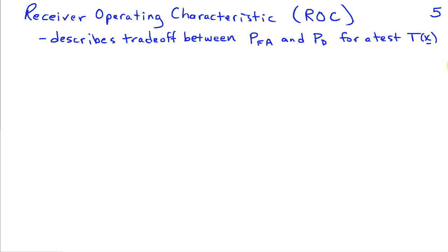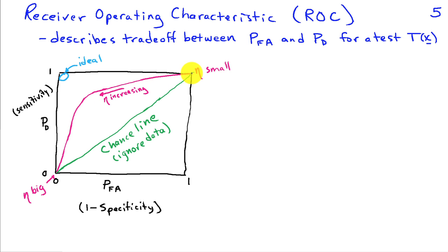The ROC is typically displayed as a graph with the probability of false alarm on the horizontal axis (ranging from 0 to 1) and the probability of detection on the vertical axis (also 0 to 1). In medical terms, the horizontal axis is one minus specificity, and the vertical axis is sensitivity. If the threshold is very small (minus infinity), we always decide H1, giving perfect detection (PD = 1) but also PFA = 1. Conversely, as the threshold becomes very large, we always decide H0, so PFA = 0 but PD = 0 as well.